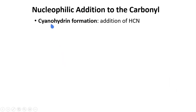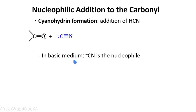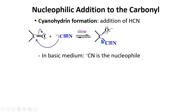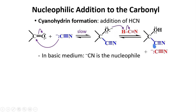The first type of nucleophilic addition is cyanohydrin formation, or the formal addition of HCN to aldehydes and ketones. In basic medium, the cyanide ion is the nucleophile, and this cyanide will attack the carbonyl carbon. You will form a tetrahedral alkoxide, and this is the slow step. The next step is the protonation of this oxygen to give you the cyanohydrin.